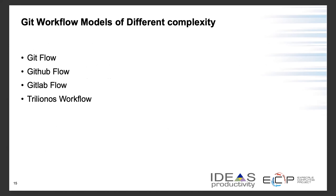So far we've looked at centralized workflow and how PRs, feature branches, and forks can help. Now we'll look at some more complex workflows: Git flow, GitHub flow, GitLab flow, and briefly the Trilinos Scientific Package workflow.